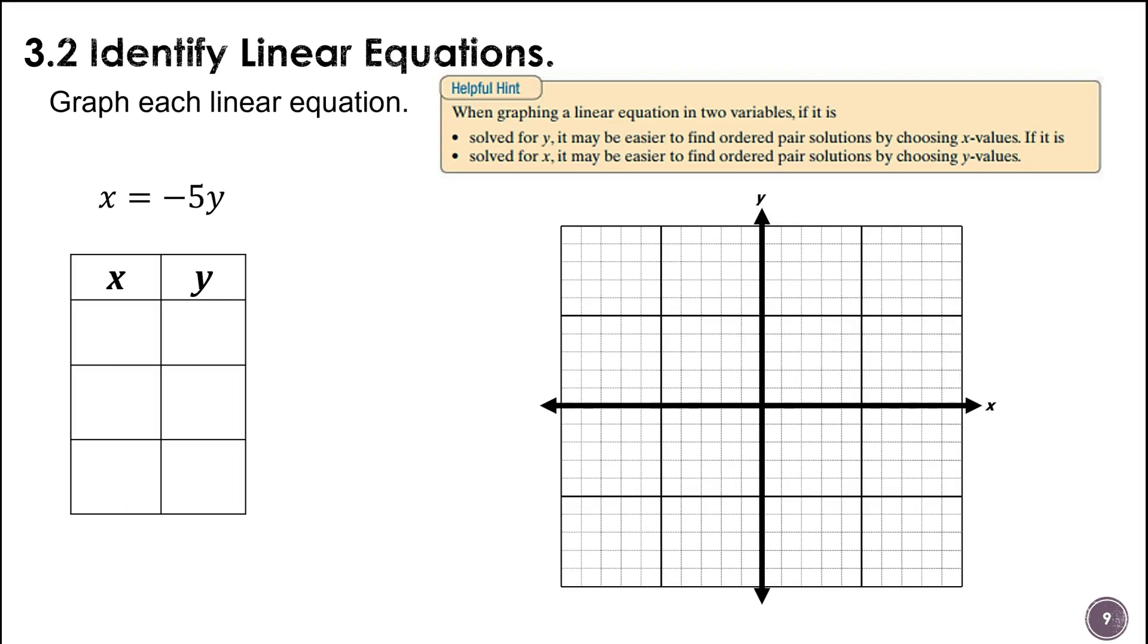So here's that helpful hint again. This time my equation is solved for x, so that means I want to choose some y's. And once again I'm going to pick some easy numbers, like negative 1, 0, and 1. So x is equal to negative 5 times y. So we're going to have negative 5 times negative 1, negative 5 times 0, and negative 5 times 1.